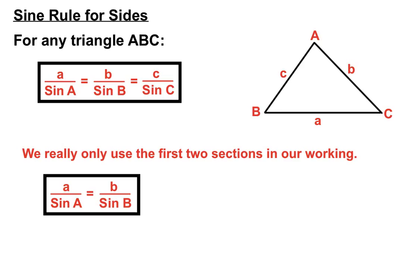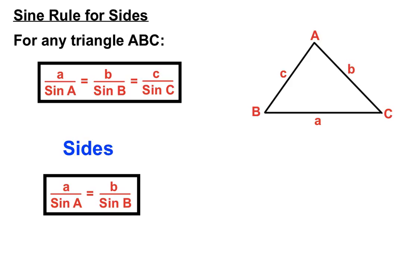We only ever really use the first two sections in our working — that's usually the amount of information we're working with. We have sides a and b on the top, and on the bottom we have the angles, each with a sine next to them. That's how things are put in the Sine Rule arrangement.